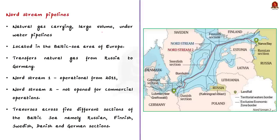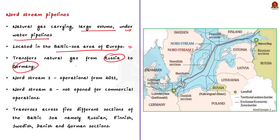Nord Stream Pipelines are natural gas-carrying large-volume underwater pipelines located in the Baltic Sea area of Europe. The pipeline transfers gas from Russia to Germany. Most of the gas goes directly to Germany while the rest travels west and southwards through onshore links to other countries and into storage areas. Note that there are two different pipelines: Nord Stream 1, which has been operational from 2011, and Nord Stream 2, which has not yet been opened for commercial operations.